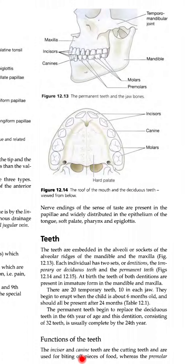Next is teeth. The teeth are embedded in the alveoli or sockets of the alveolar ridges of the mandible and the maxilla. Each individual has two sets or dentitions — the temporary or deciduous teeth and the permanent teeth. At birth, the teeth of both dentitions are present in immature form in the mandible and maxilla.